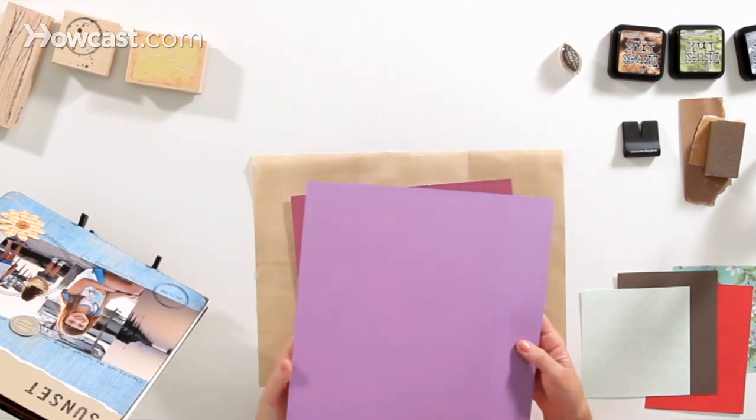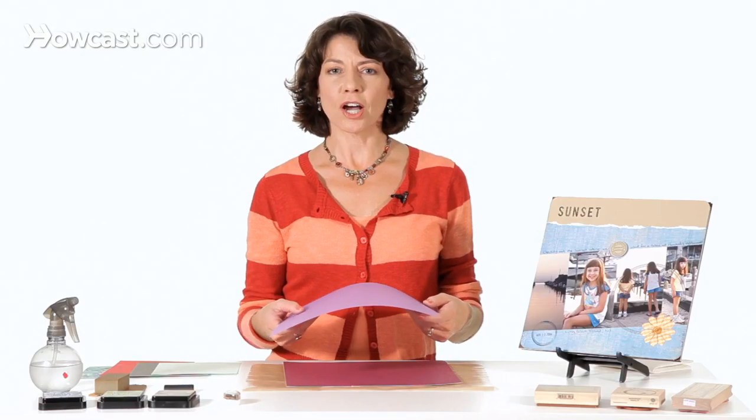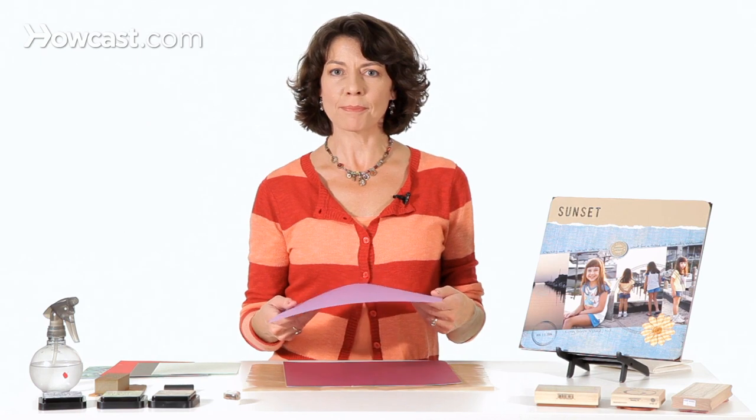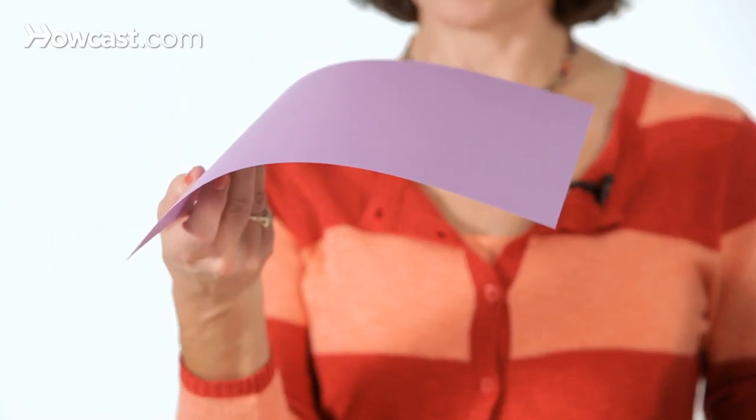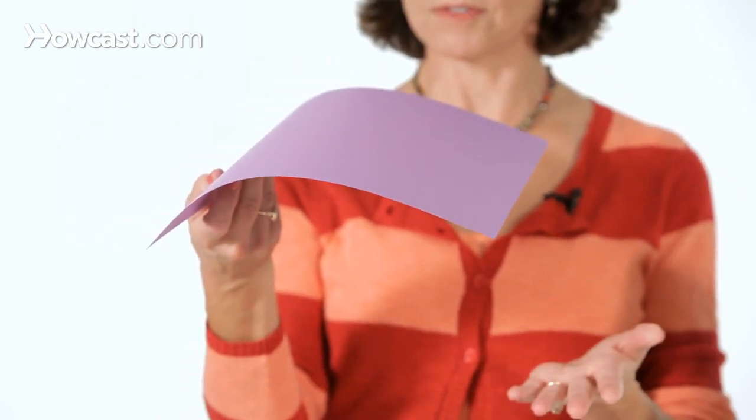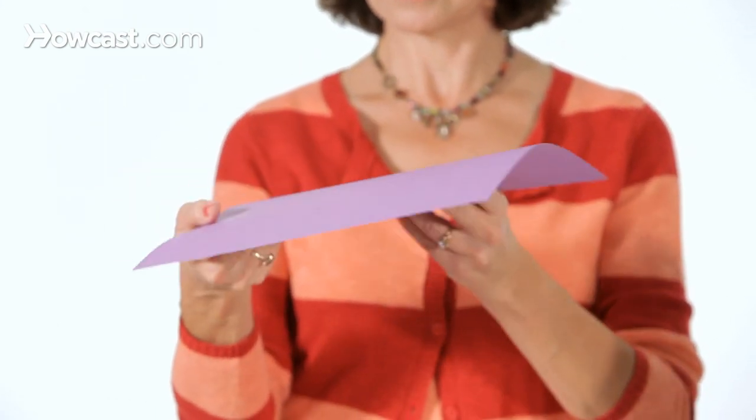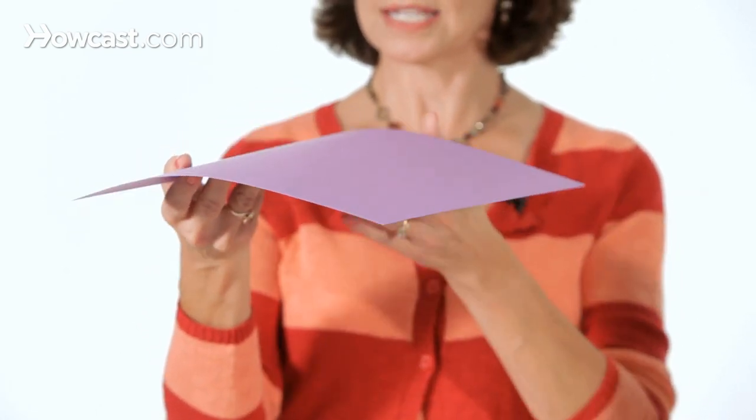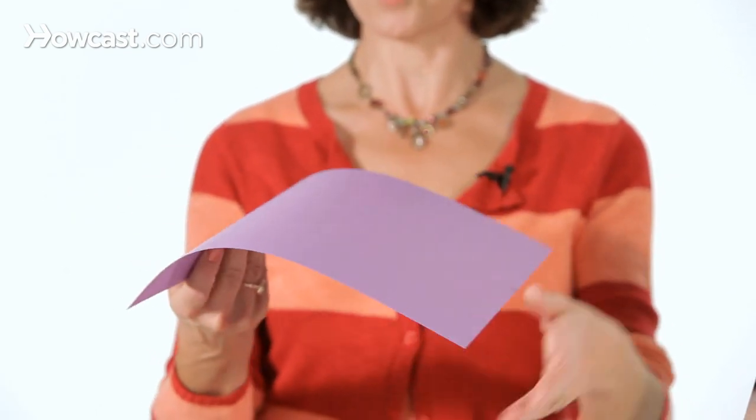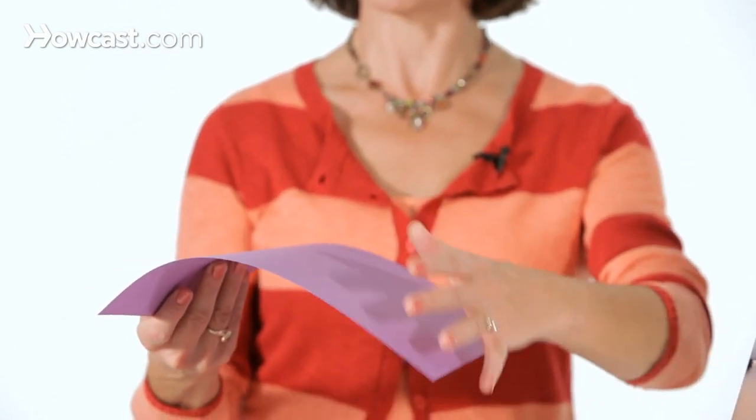So here I have a piece of cardstock, and the first thing to know is that cardstock and paper actually has a grain. So if you hold the paper this way, you can see how it kind of flops over to the side. Turn it 90 degrees, and you see it flops to the side just a little less, so you can tell that the grain is actually going in that direction, which is causing it to flop over.